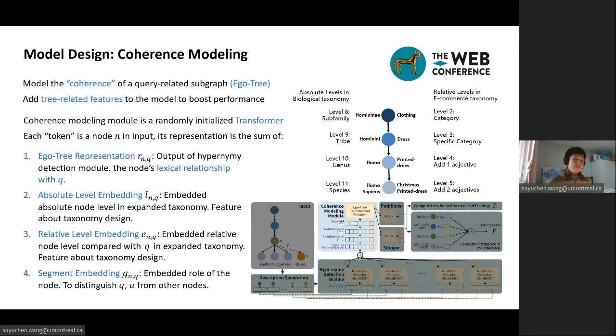We use a randomly initialized transformer encoder to detect the overall coherence. Each token for a transformer is a node in input. Its representation is the sum of these four representations. First, the output of hypernymy detection module. Second, absolute level embedding, which is the embedded absolute level in the expanded taxonomy. Third, relative level embedding, which is the embedded relative node level compared with Q in the expanded taxonomy. And finally, the segment embedding, which is zero if the node is anchor, one if the node is query, and two otherwise. The transformer has two CLS tokens, which are two outputs for the latter Pathfinder and Stopper modules, respectively.